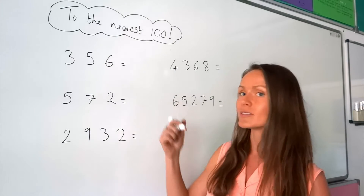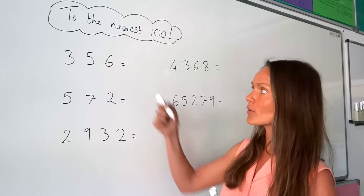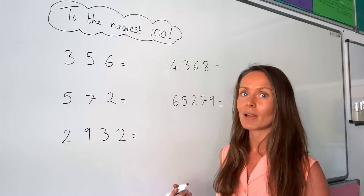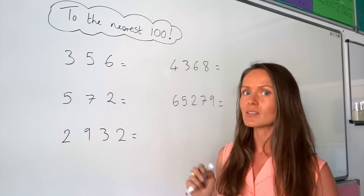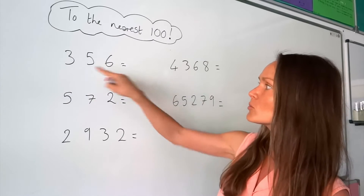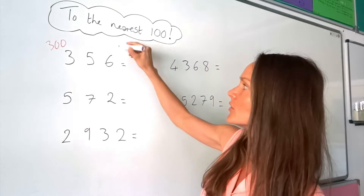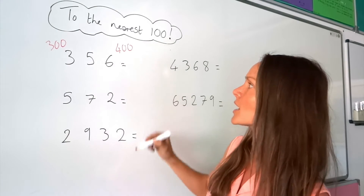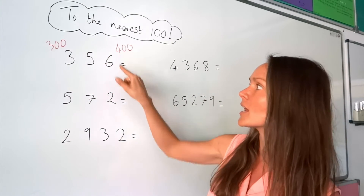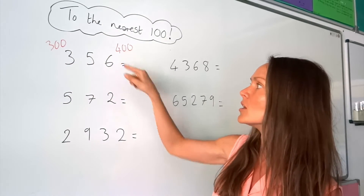So if I take the first one, 356, I'm going to start by writing down two numbers that are in the 100 times table — one that's smaller than this number but closest to it, and one that's just a bit bigger. These are the numbers either side, and I have to round this number either down to this one or up to this one.